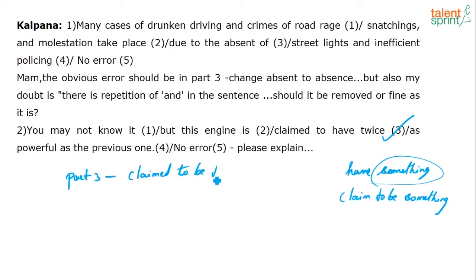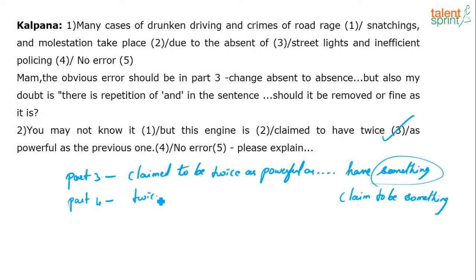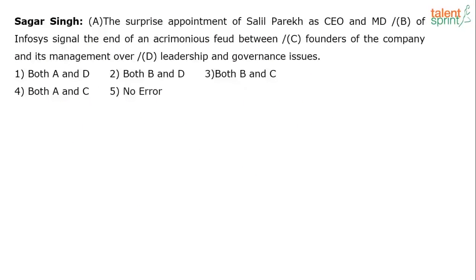So the error could be in part three — 'claimed to be twice as powerful as the previous one.' But the error can also be in part four, where 'twice as powerful' becomes 'twice the power.' I can rewrite this sentence both ways, so the error can be in either part three or part four.